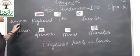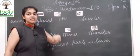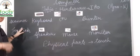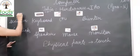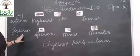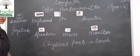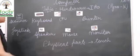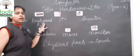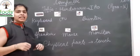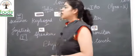First, scanner — scanner ke through we put in the data, so scanner is an input device. Next, joystick — through joystick we give directions and instructions to the computer about what we want it to do, so joystick is also an input device. Next is keyboard — we type on the keyboard and give commands or instructions to the computer, so keyboard is also an input device.